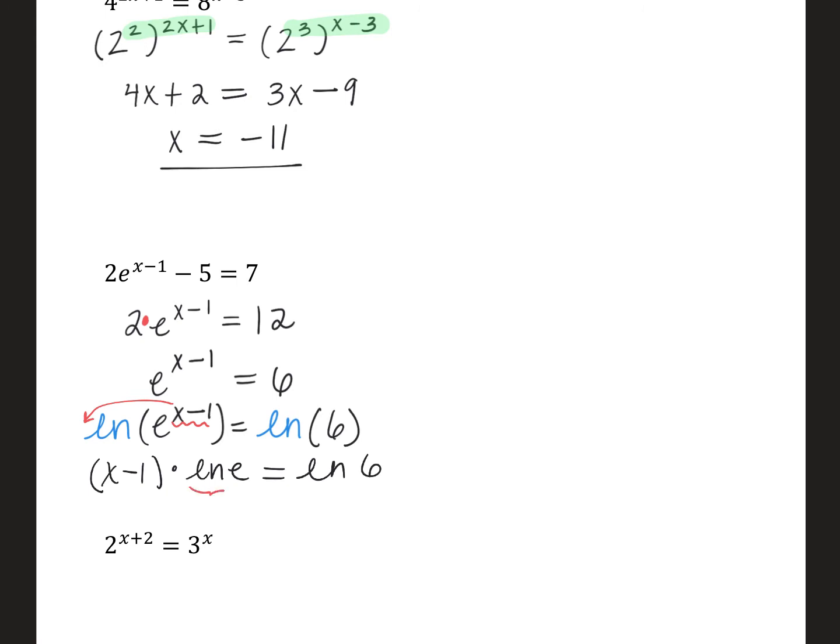This is a good thing to know. The natural log of E is one just because E to the first power is E. So in essence, because it's multiplication, I'm going to cross that out. So then I'm left with X minus one is equal to the natural log of six. So then if I solve for X by adding one, I get one plus the natural log of six.